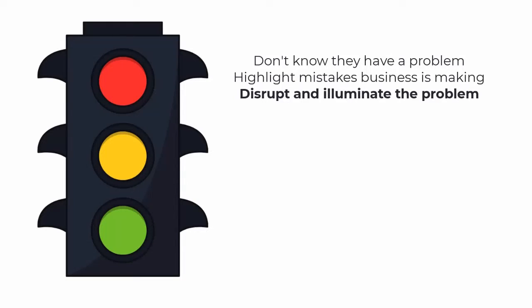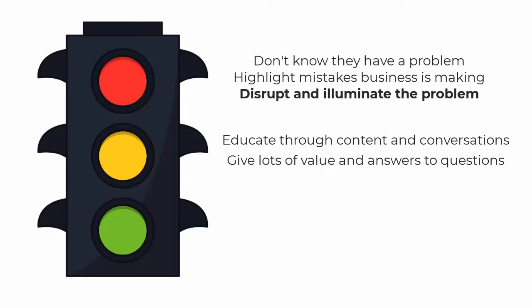The second part is amber. You've disrupted someone — they're thinking, 'I didn't know I was making those mistakes.' Now you have to educate them through content and conversations, saying 'this is the mistake you're making, but here's how you overcome it.' You have to give so much value and answer the questions people are Googling — why am I making this mistake, and how do I overcome it?